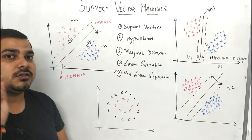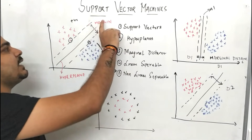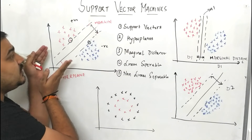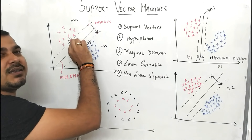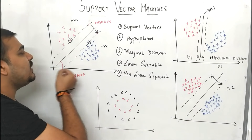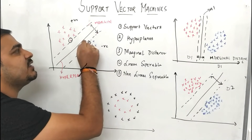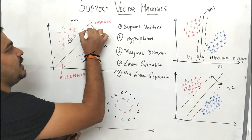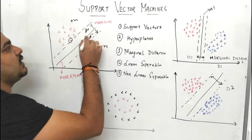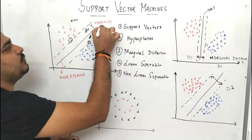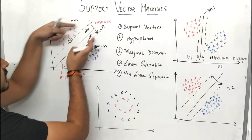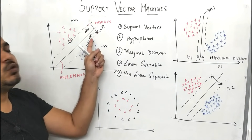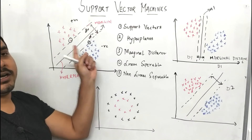So Support Vector Machine does not just focus on creating one hyperplane — instead it also creates two parallel hyperplanes such that one passes through the nearest positive point and the other passes through the nearest negative point. When we compute this distance — d positive and d minus — this whole distance is basically called the marginal distance. The distance between these two parallel dotted lines is called the margin.